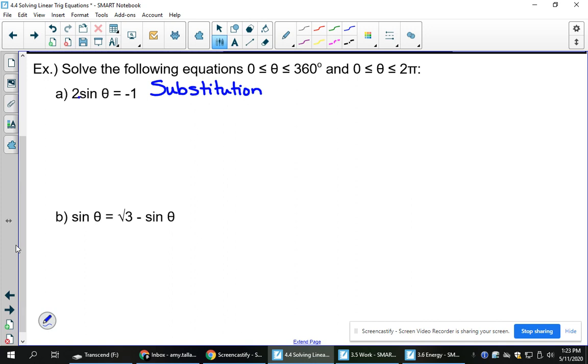Substitution is where you find the trig ratio, and you sub it out for some other variable so that the equation looks much more like junior high algebra. So if I replace that, let's say, with an A, it would look like 2A equals negative 1. This is something you likely could have solved in grade 7. How do you get rid of the 2 in front of the A? Well, they're multiplying, so you do the opposite, which is divide, and you get A equals negative 1 half.